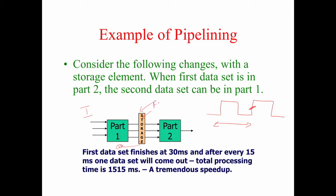Please note that this is a flip-flop. The content of it will change only at the positive edge of the clock. At a particular clock edge, the first set of data enters and gets processed in Part 1. At the end, when the next clock pulse comes, that processed result is stored here. In the second period, that data gets processed by Part 2 and in the next clock pulse, it will be available as output.